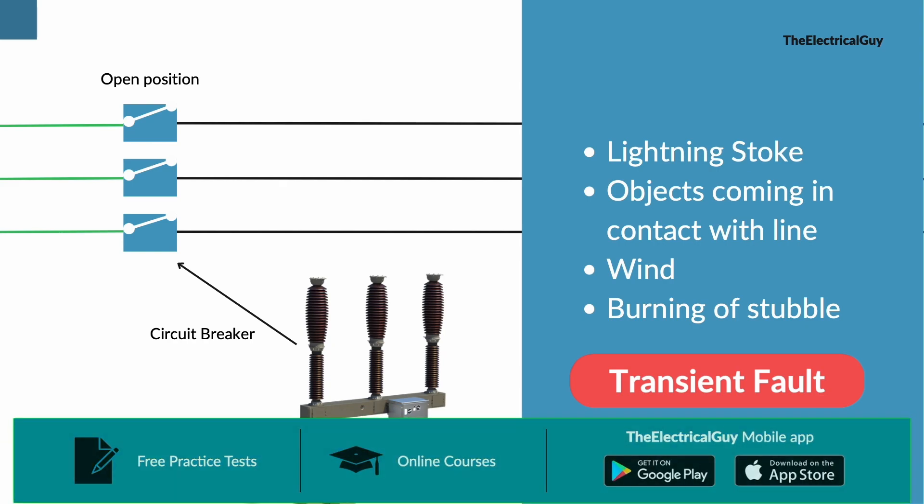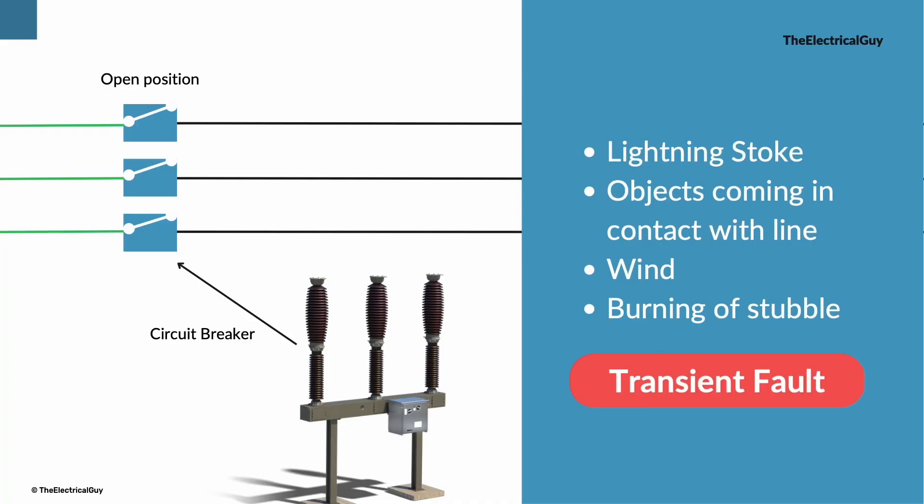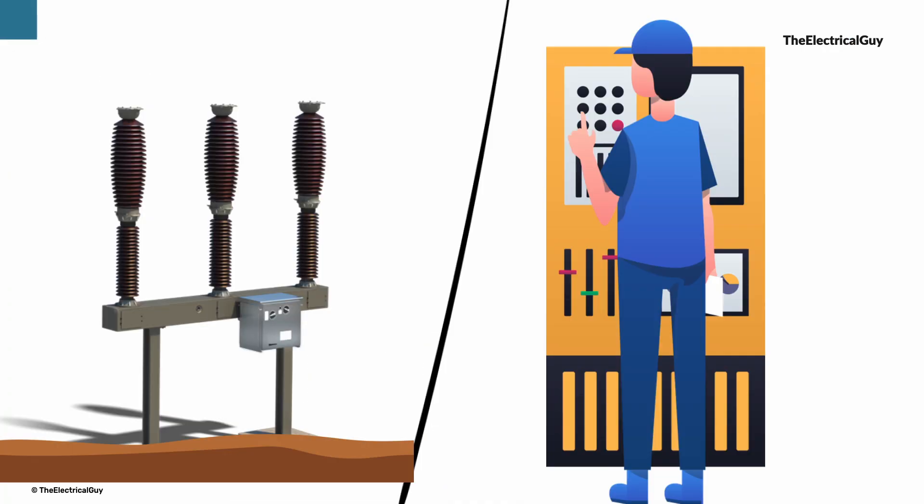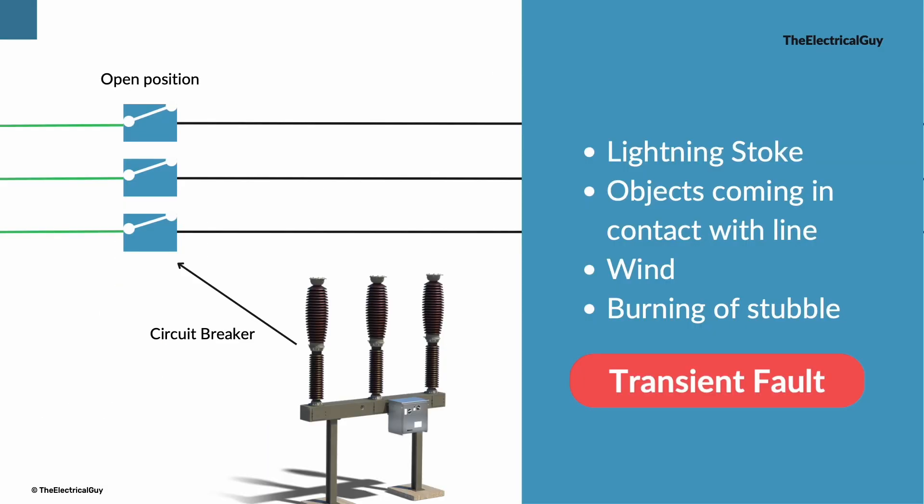But every time the circuit breaker opens after a fault, I need to operate that breaker manually to bring back the supply and system stability. Now when I know that the fault will go away automatically majority of the time, instead of operating breaker manually, can I operate breaker automatically?